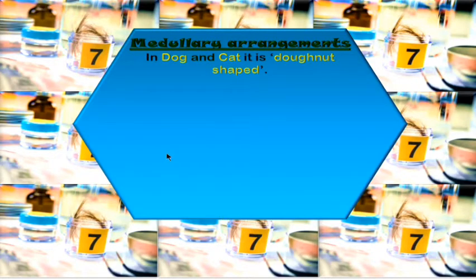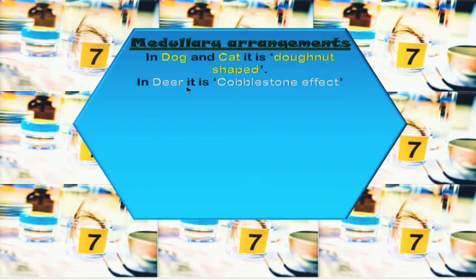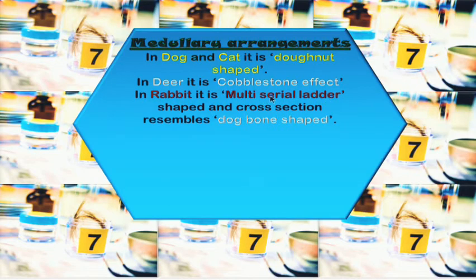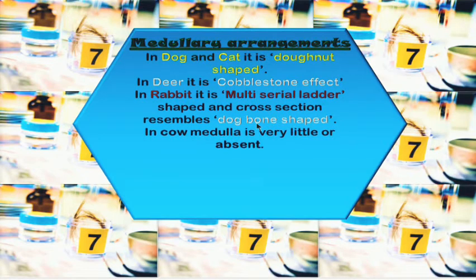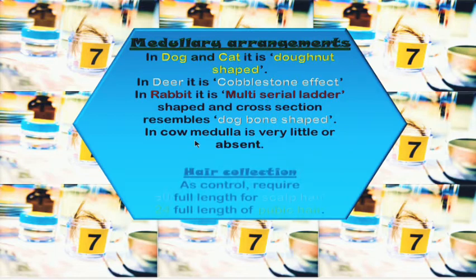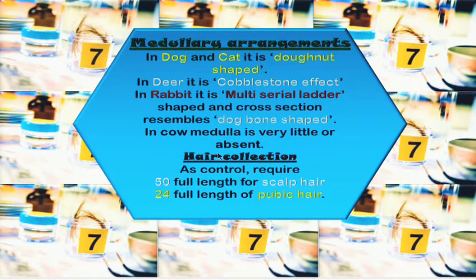Medullary arrangements help differentiate species. Dog and cat hair has a donut-shaped medulla. Deer hair shows a cobblestone effect. Rabbit hair has a multi-serial ladder arrangement with many medullary clumps, and its cross-section gives a dog-bone shape. Cow hair has very little or totally absent medulla. Even in human hair the medulla may be absent or discontinuous in some parts.